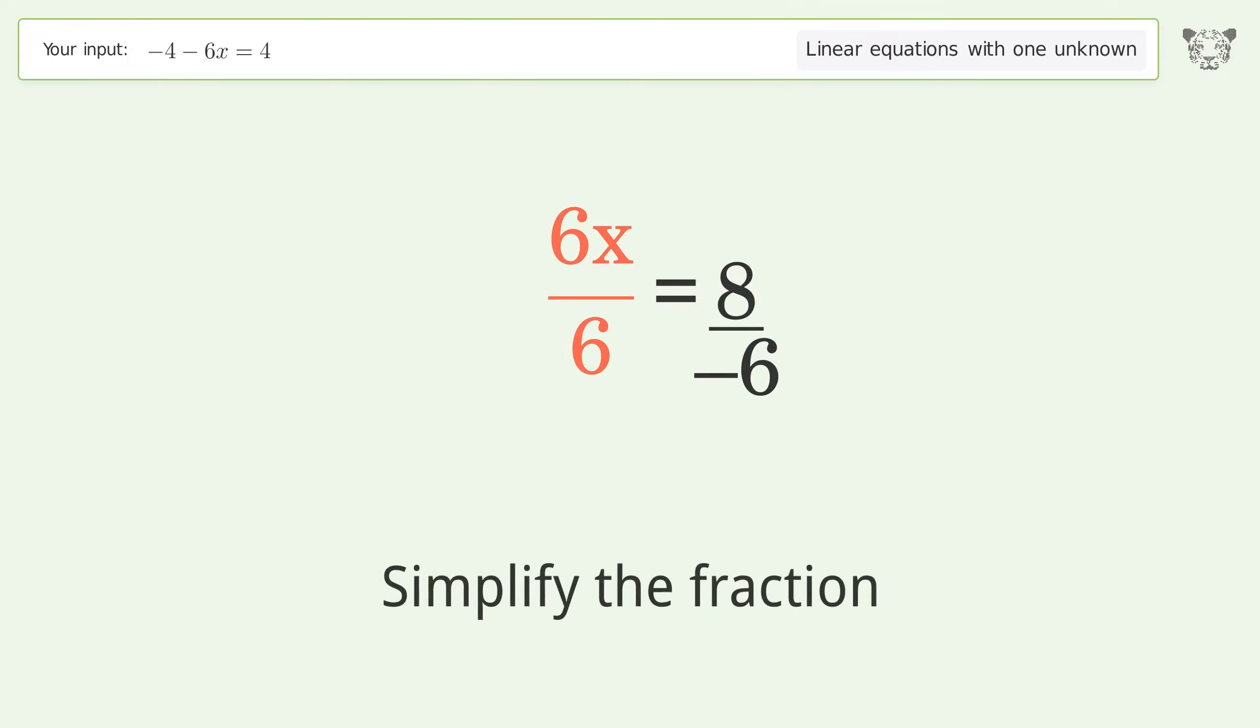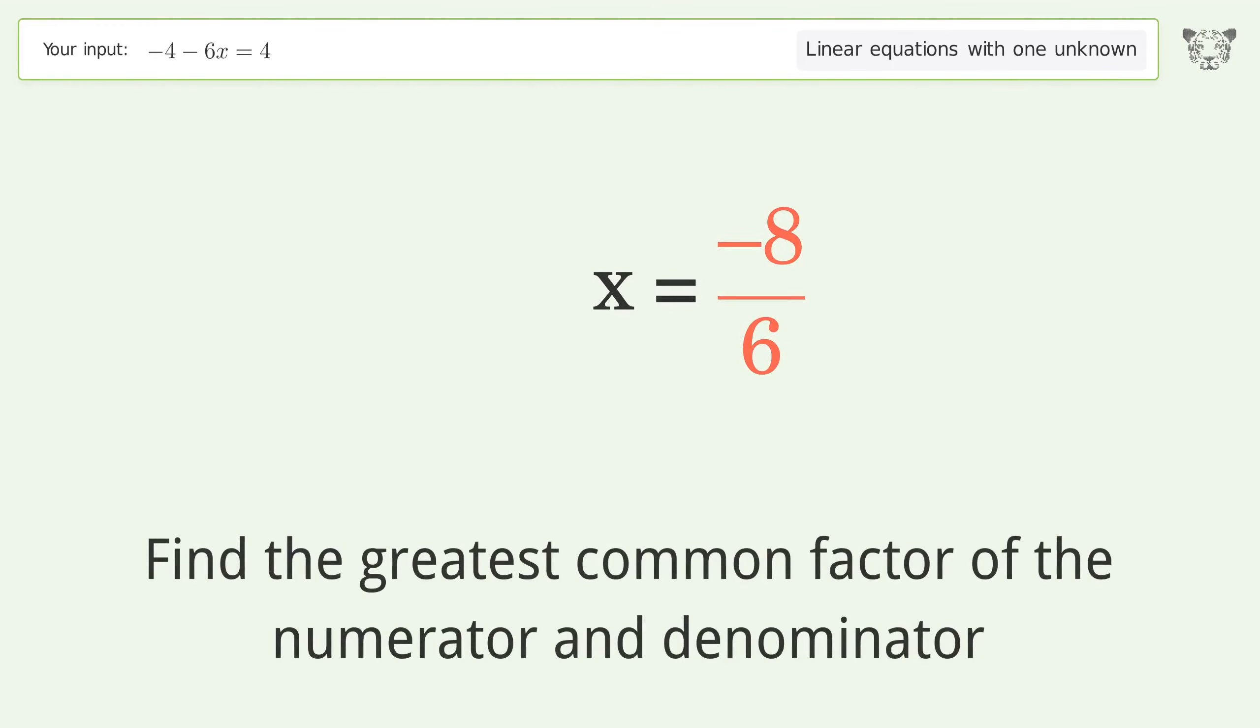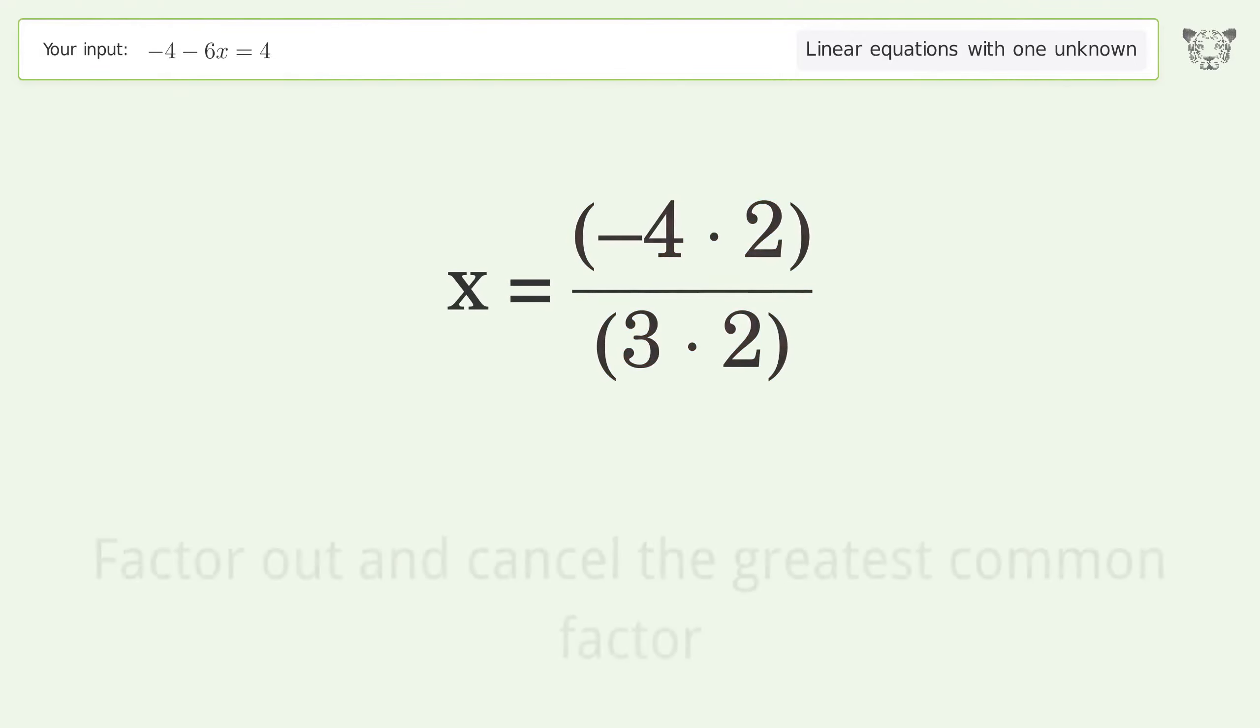Simplify the fraction. Move the negative sign from the denominator to the numerator. Find the greatest common factor of the numerator and denominator. Factor out and cancel the greatest common factor.